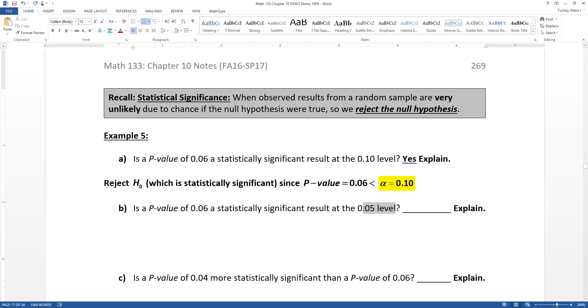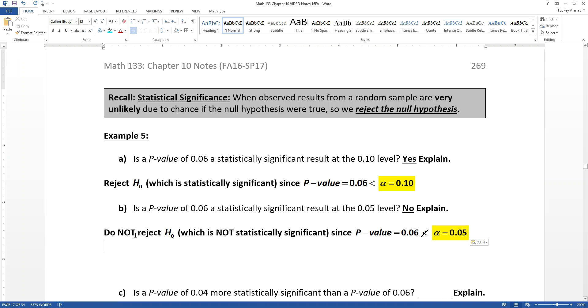What if your alpha was 0.05 though? So if your p-value is 0.06 but your alpha is 0.05, that's not so good for you, right? So that's a no because your p-value is not less than your alpha. Therefore, you're not going to get to reject the null hypothesis and that's not statistically significant.